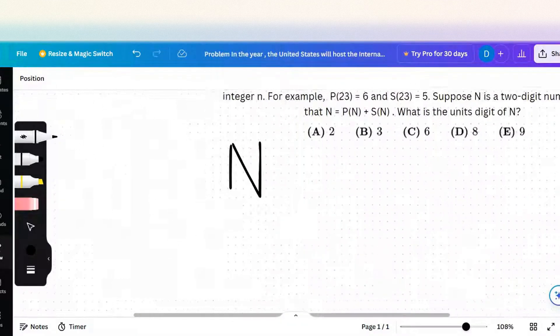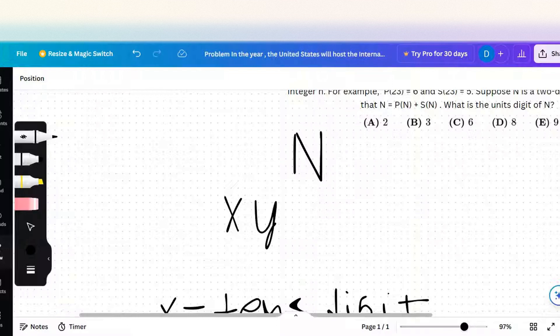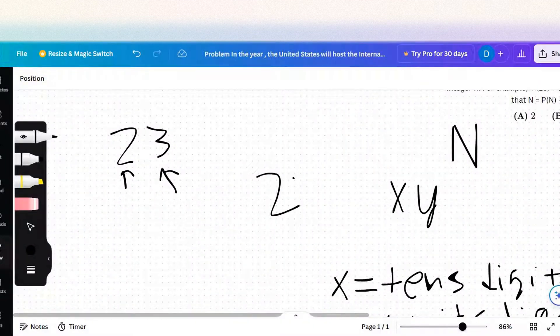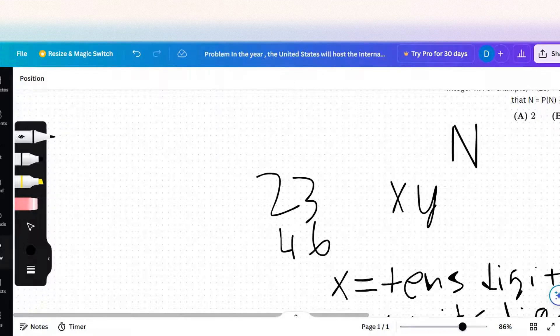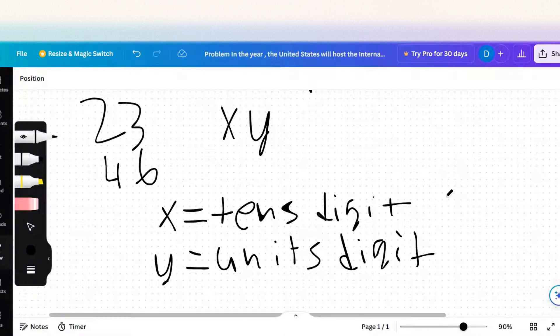Integer n can be written or seen as x, y, or as multiples like 23 or 46. x is the tens digit and y is the units digit.